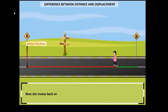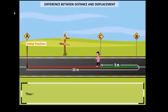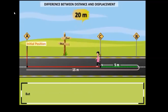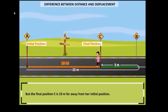Now the girl moves back and reaches point C, covering a distance of 5 meters. Thus the new total distance between point A and point C is 20 meters. But the total displacement between point A and point C is 10 meters — this is the shortest straight line distance between point A and point C, in the direction of east.